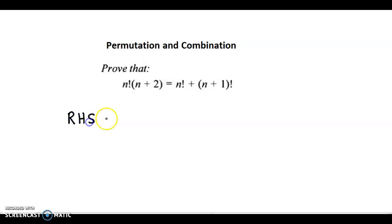The right hand side is given as n factorial plus n plus 1 factorial. If you observe, we have n factorial as a common factor. We can split the second term, n plus 1 factorial.